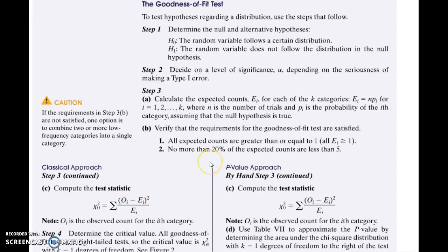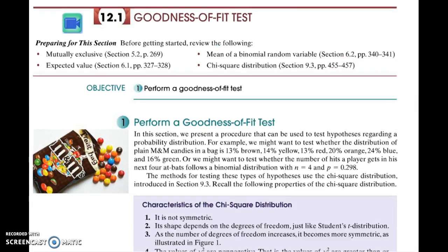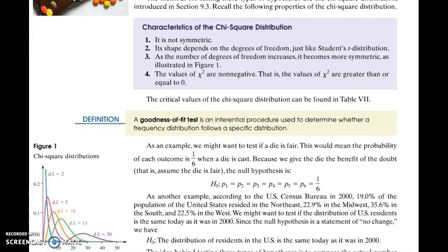An extra step for the goodness of fit test is that you'll need to calculate the expected counts, and I'll go through an example of that. Then you have to make sure these requirements are met for those expected counts in order to use this goodness of fit test. When you calculate your test statistic, they follow the chi-squared distribution.